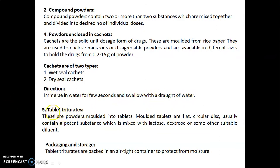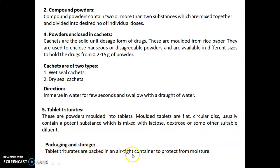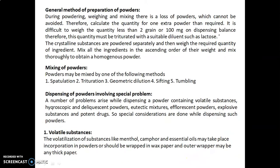Fifth, tablet triturates. These are powders molded into tablets. Molded tablets are flat circular discs usually containing a potent substance mixed with lactose, dextrose, or some other suitable diluent. For packaging and storage, tablet triturates are packed in an airtight container to protect from moisture.